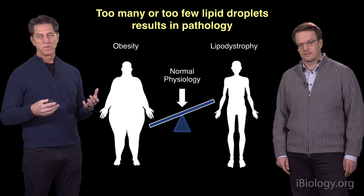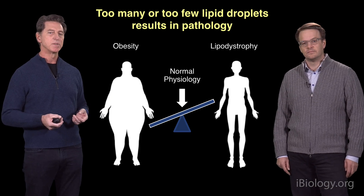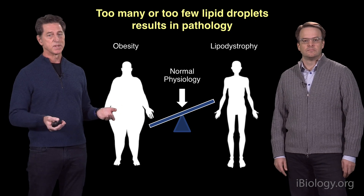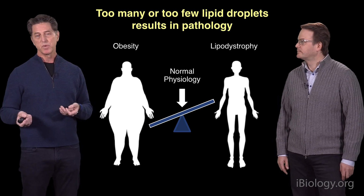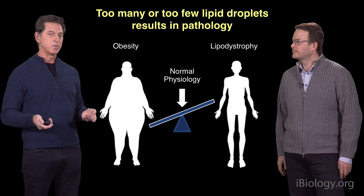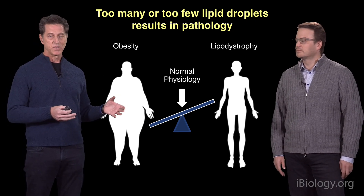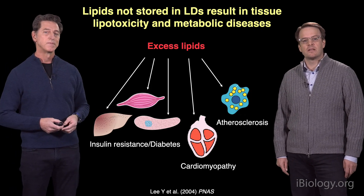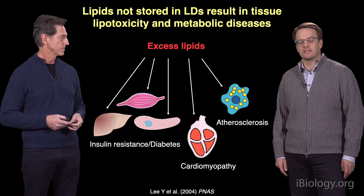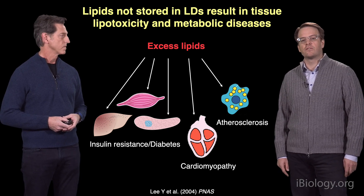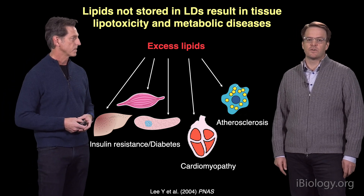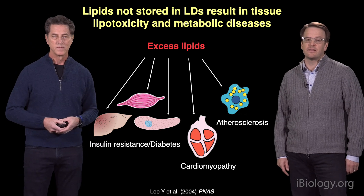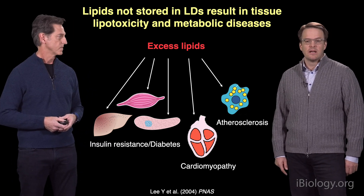Lipid droplets are part of normal lipid and triglyceride metabolism, but a proper balance of lipid droplets in cells and tissues is required. Obesity constitutes a state where there is an excess abundance of lipid droplets, while conversely, lipodystrophy — the lack of fat — is a situation in which lipid droplets are scarce or absent. Importantly, both of these conditions are associated with insulin resistance, diabetes, and illness. Excess lipids are thought to flow over into tissues where they're normally not very abundant — such as the liver, muscle, pancreas, or heart — where they interfere directly or indirectly with normal physiological function, leading to a form of toxicity.